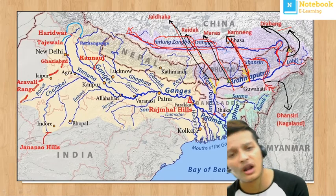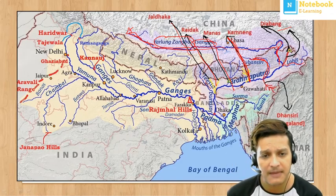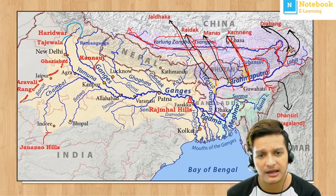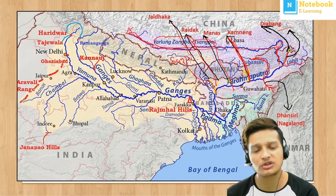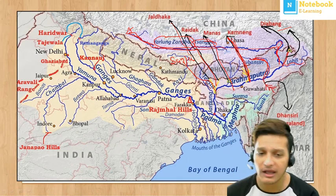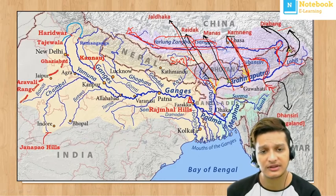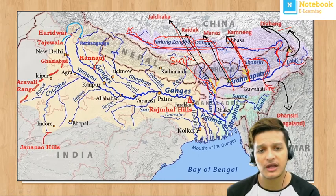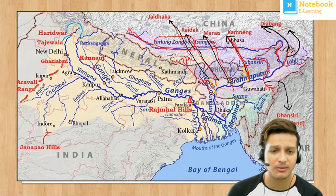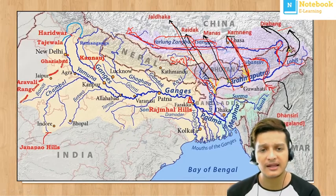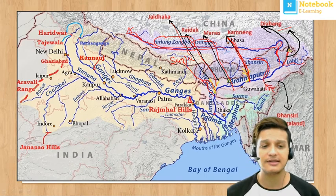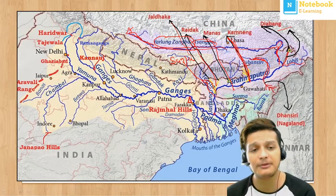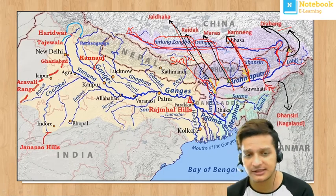Within this, the Sankosh River joins before Teesta. So after Jaldhaqa, Sankosh joins, and after Sankosh the Teesta River joins. So the order to remember is: Subansiri first, then Kameng, then Manas, then Raidak, then Sankosh, and finally Teesta on this side.